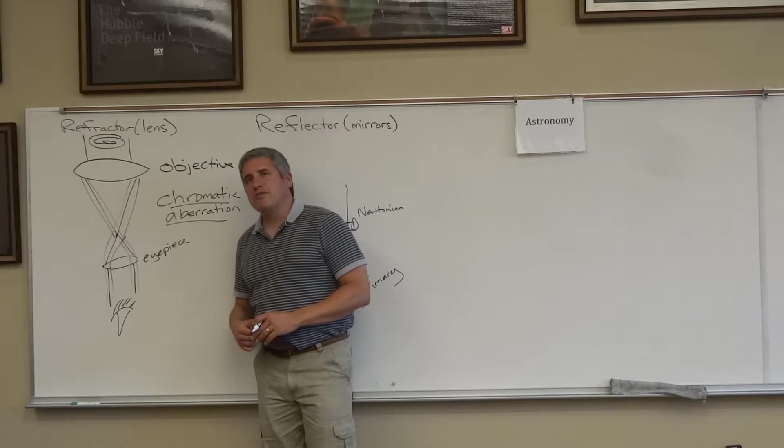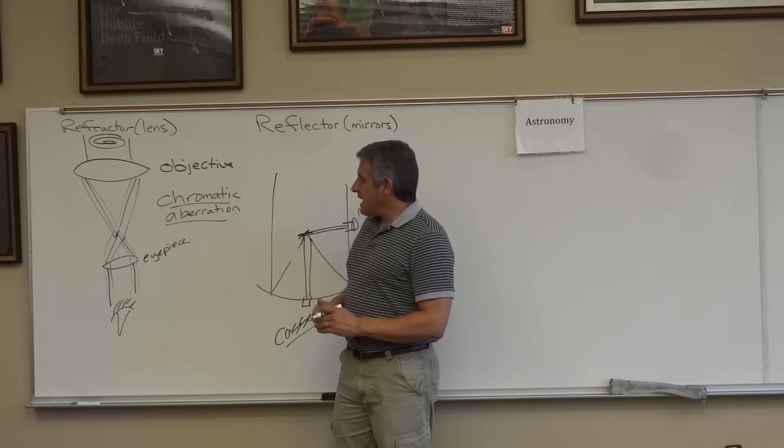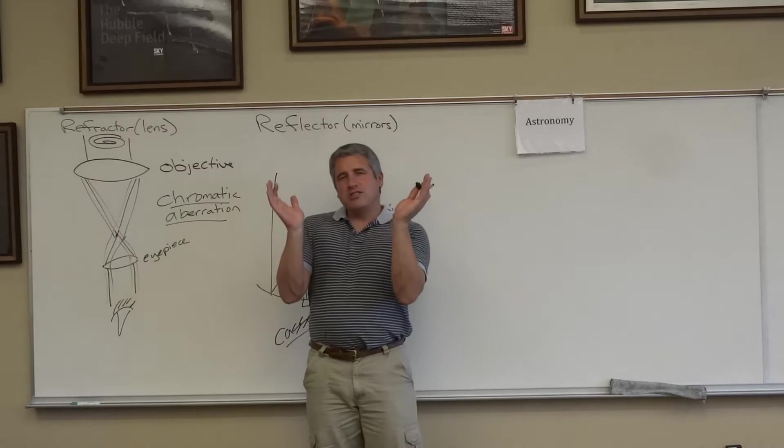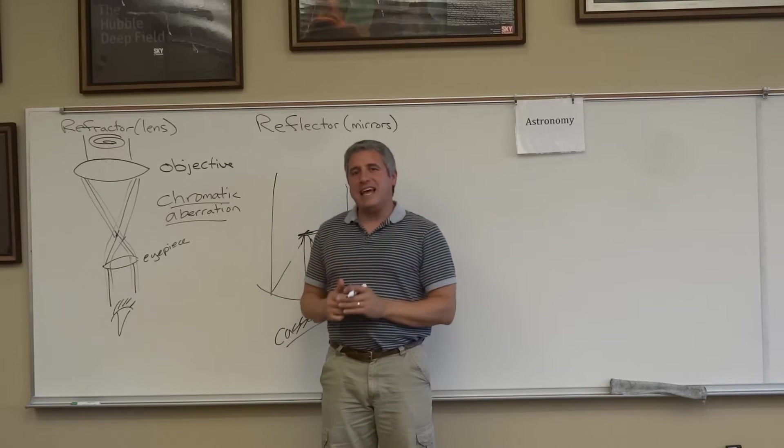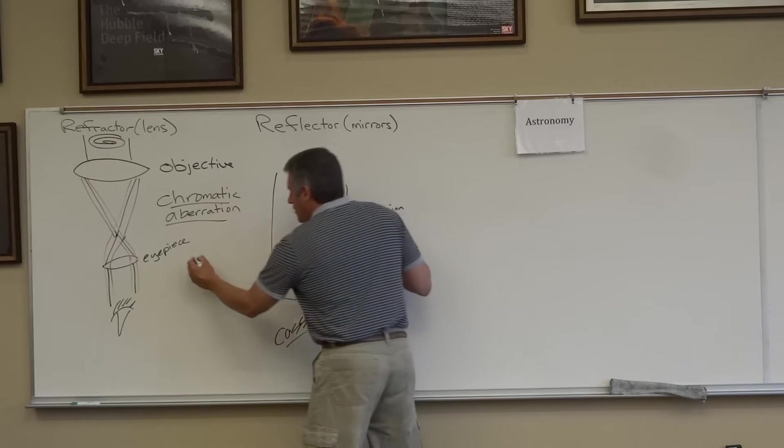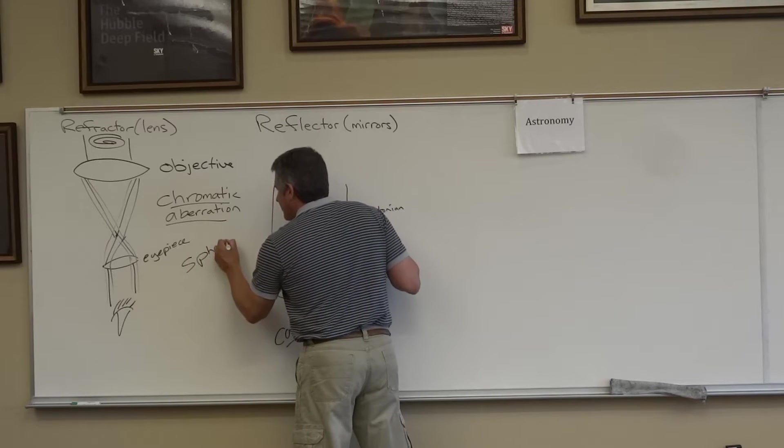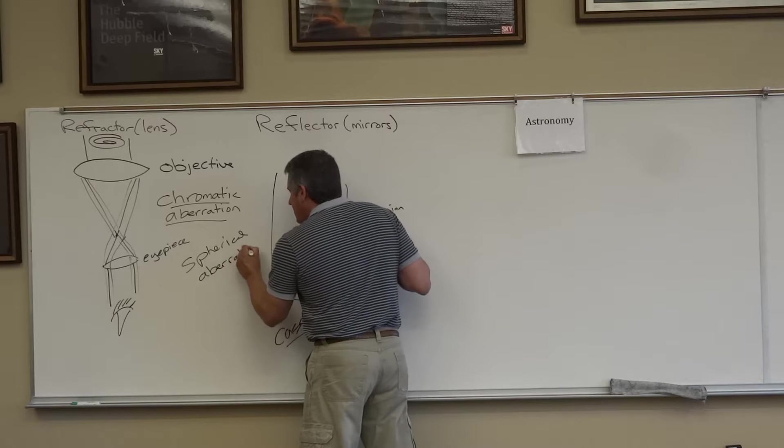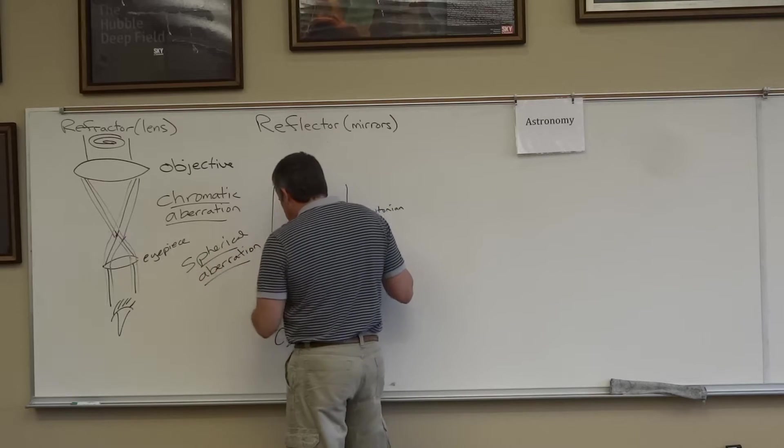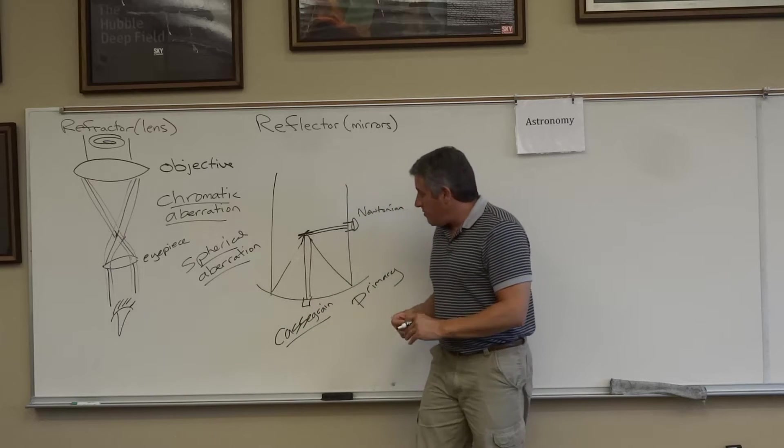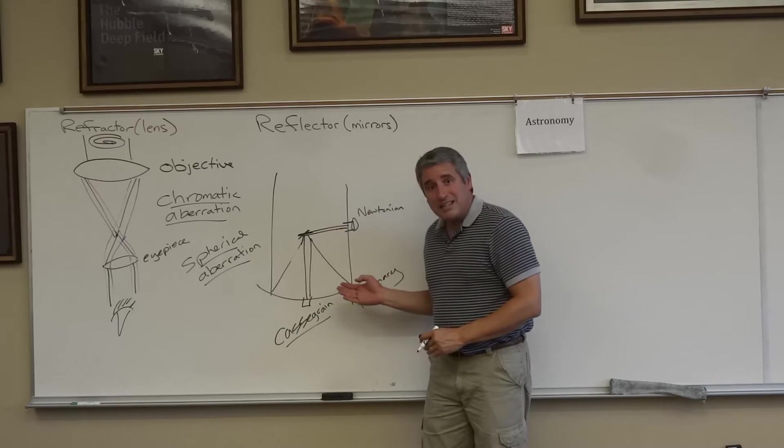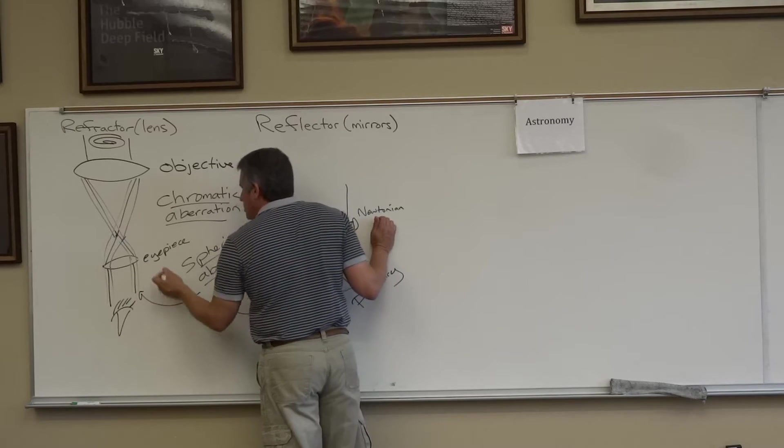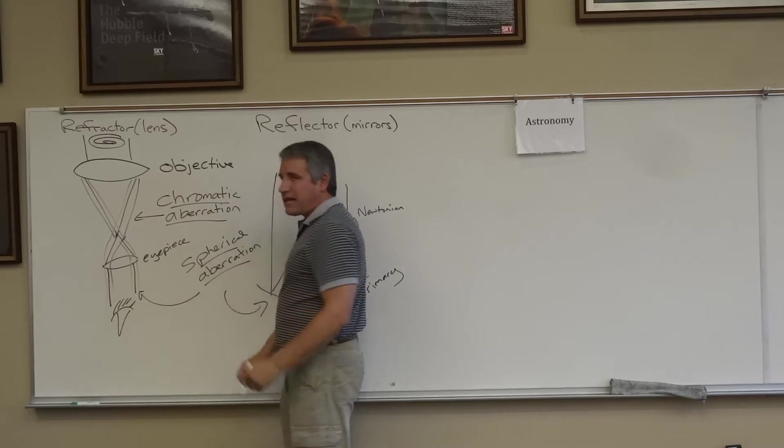The other type of aberration we find in big telescopes is that the lens or the mirror itself starts to get so big and ungainly that it can bend out of round. We call that spherical aberration. And that's present in both forms of telescopes. But again, the big reflectors have the advantage of being able to be supported from behind. So, though both types of telescopes suffer from spherical aberration, only one type suffers from chromatic aberration.